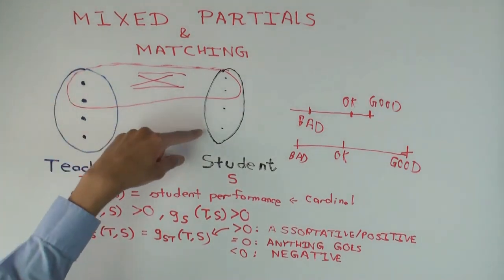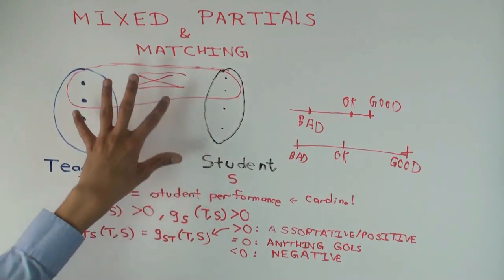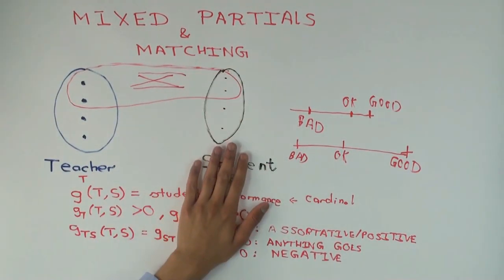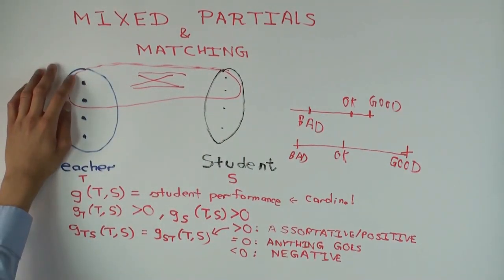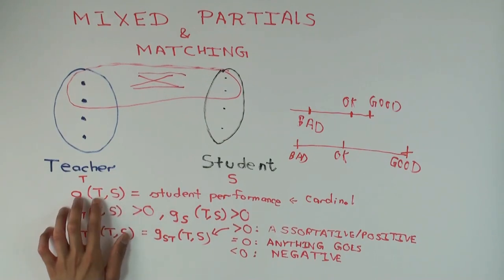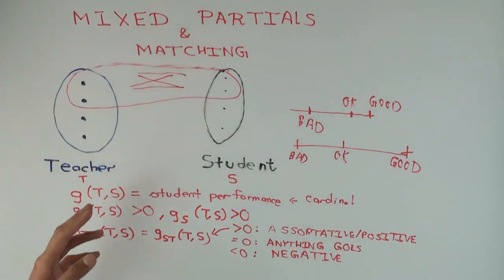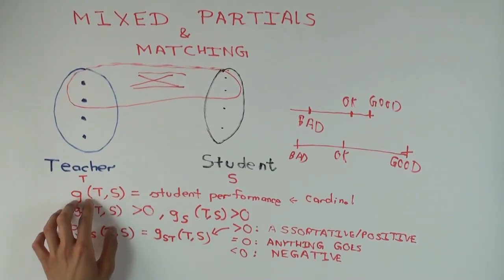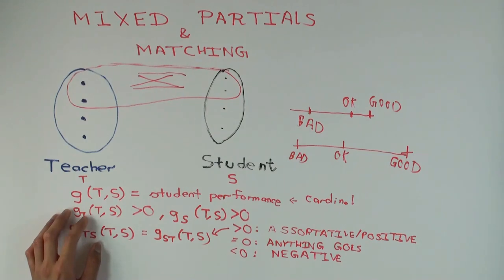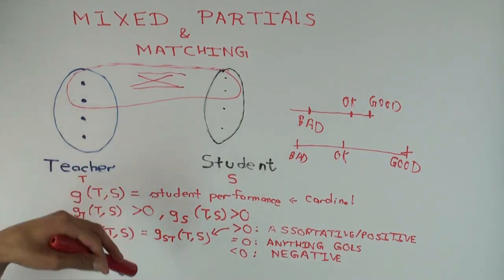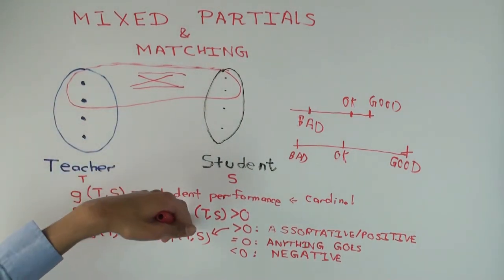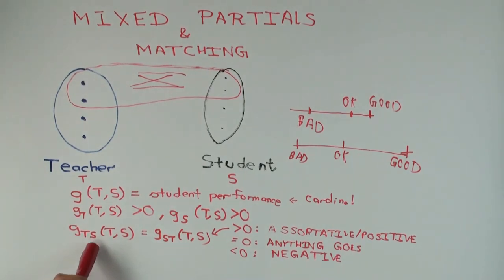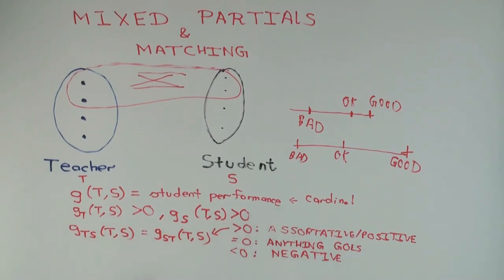This was mixed partial and matching between teachers and students. You could do something similar in the marriage market or mating market — instead of teachers you could have females and instead of students you could have males, or vice versa. Instead of student performance you would have a domestic production function, and differentiate with respect to female and male quality. Even there, if you have a single ranking for females and males, the mixed partials could go either way.